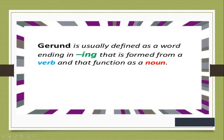Gerunds are words that are formed with verbs but act as nouns. Just like participles — those words are also verbs but act as adjectives. A gerund is usually defined as a word ending in -ing that is formed from a verb and functions as a noun. Since every gerund is a verb with -ing tagged to its tail, it will be very difficult to recognize a gerund because in every verb, -ing is tagged to its tail. There are no exceptions to this rule.